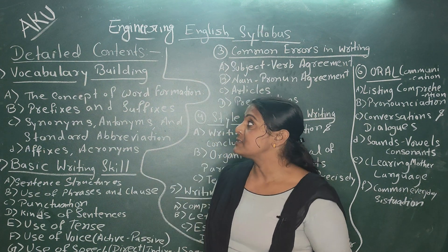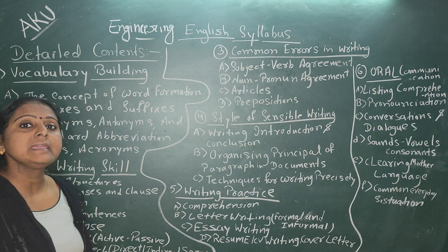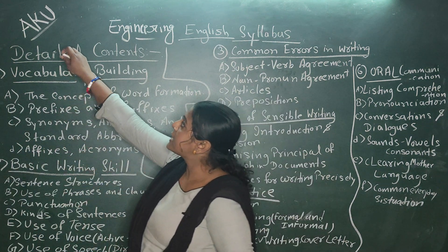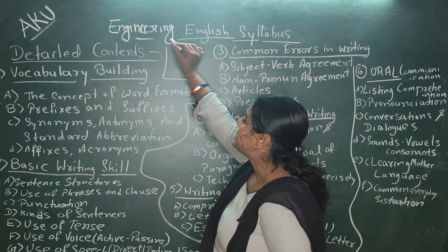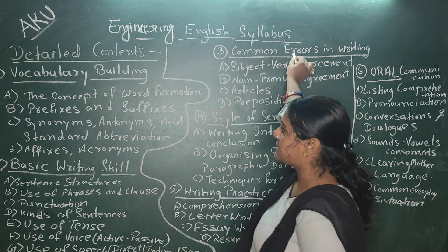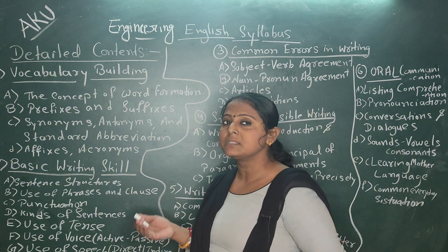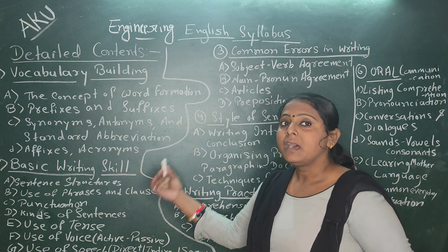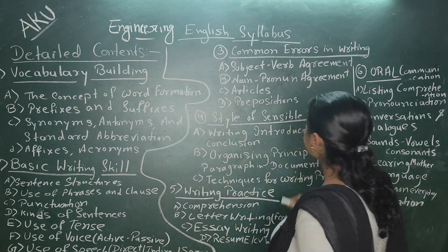Today in this video, I will explain the Engineering English syllabus. As you know, AKU — Aryabhatt Knowledge University — Engineering English syllabus. In this syllabus, in your engineering lab and tools, we are going to study mainly six points.